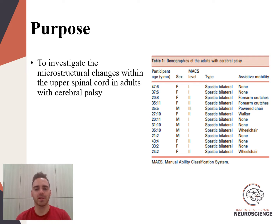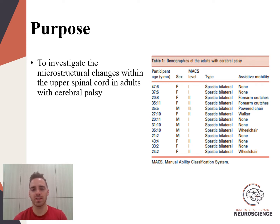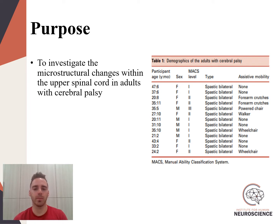Previous work has demonstrated that in response to an insult to the developing brain, there are a series of neuroplastic changes that occur both within the brain and within the spinal cord. Despite this knowledge, the specific microstructural changes that may occur in the spinal cord, as well as how these may be contributing to sensory motor deficits seen within this population, remains unknown.